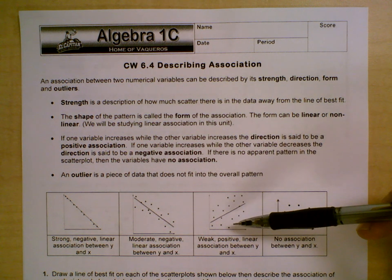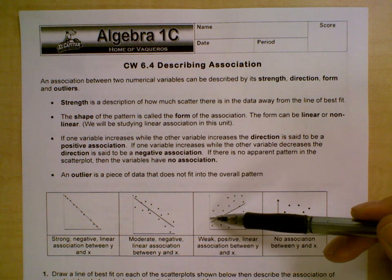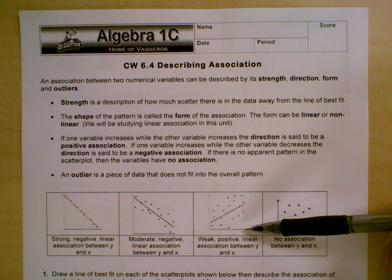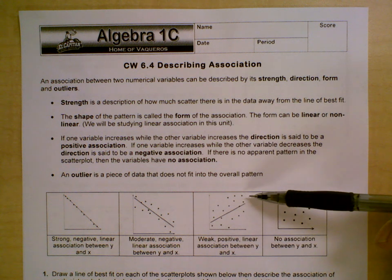This one is the opposite. This one is a positive association. As this variable increases, this one is also increasing. Once again, it has a positive slope.